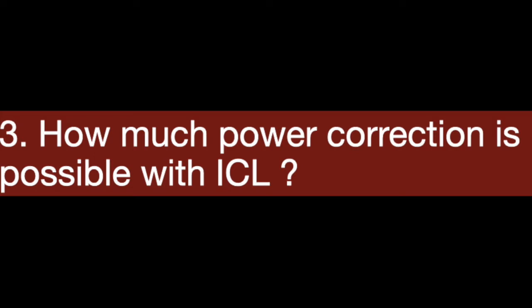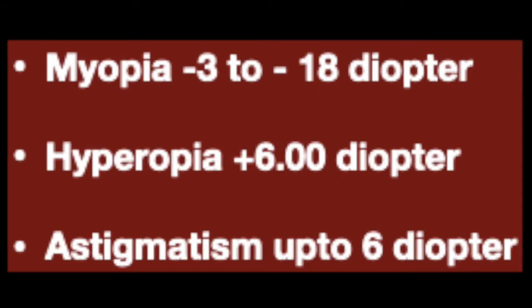How much power can be corrected by ICL? This is where ICL scores over LASIK. ICL can correct up to minus 18 diopters of myopia, up to 6 diopters of hyperopia, and up to 6 diopters of astigmatism. So it has a bigger range of correction compared to LASIK.